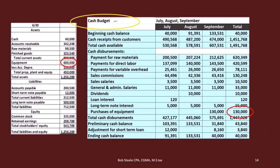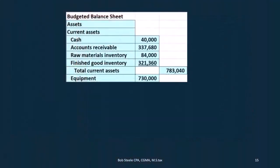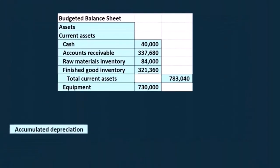If we had financed it, we'd have to find how much equipment was purchased whether it was financed or not. In this case, we had the $600,000 from the prior period, plus one purchase during this time period for cash of $130,000. That gives us the total equipment of $730,000.